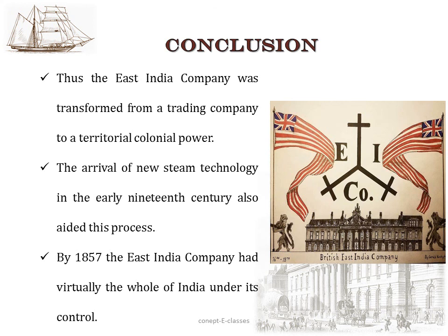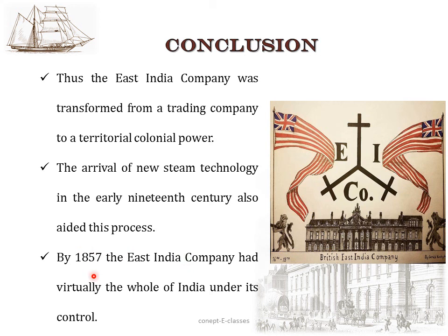From this chapter we can conclude that the East India Company was transformed from a trading company to a territorial colonial power. The arrival of new steam technology in the early 19th century also aided this process — before the steam engine, it took about 6 to 8 months to travel to India by sea, but steam ships reduced the journey to 3 weeks, enabling more Britishers and their families to come to India. By 1857, the East India Company had virtually the whole of India under its control.